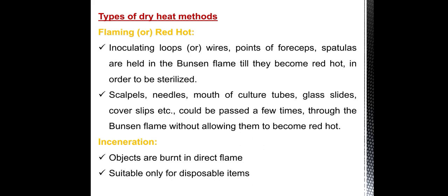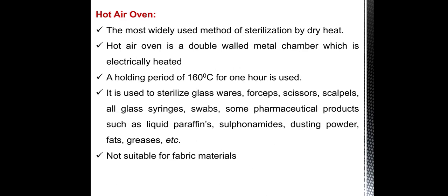Incineration: objects are burned in direct flame, suitable only for disposable items. Hot air oven: the most widely used method of sterilization by dry heat. Hot air oven is a double-walled metal chamber that is electrically heated. A holding period of 160 degree Celsius for 1 hour is used. It is used to sterilize glasses, forceps, scissors, all glass wares, swabs, some pharmaceutical products such as liquid paraffins, dusting powder, fats, etc. Not suitable for fabric materials.